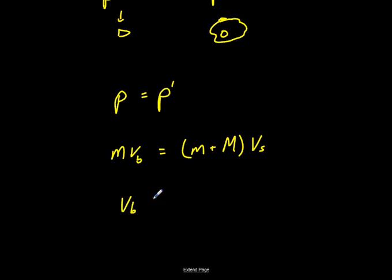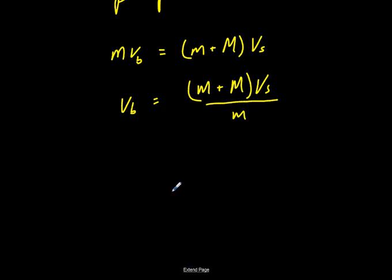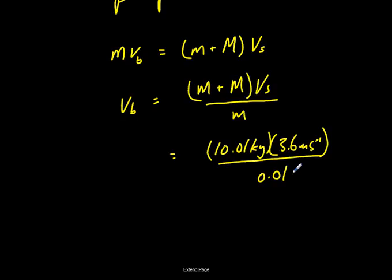So do a little rearrangement. And let's put some numbers in. All right, so we've got, well, this plus this should be 10.01 kgs, and 3.6 meters per second, okay? Divide it by the mass of the bullet. That should give us the initial velocity that the bullet had before the collision. Well, we get a number that might not necessarily be realistic, of 3,603 meters per second.